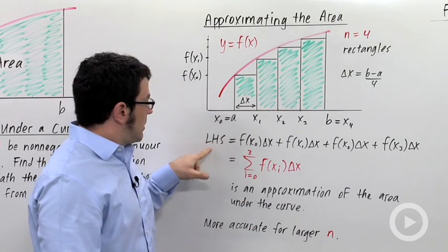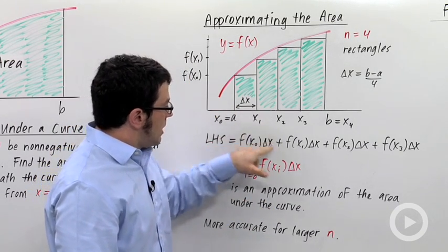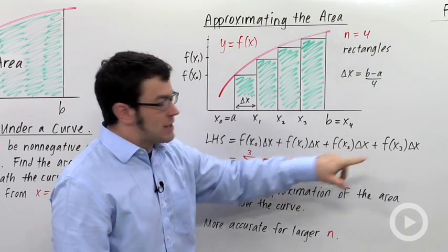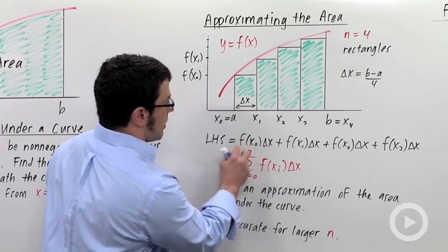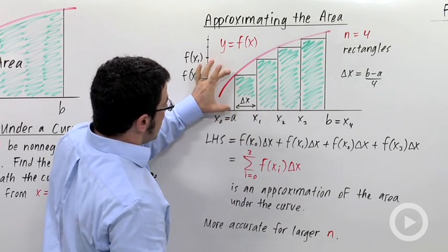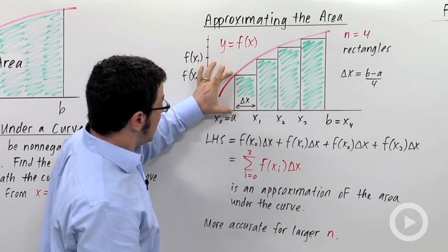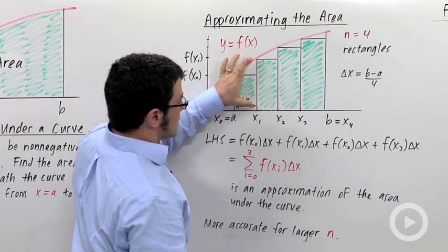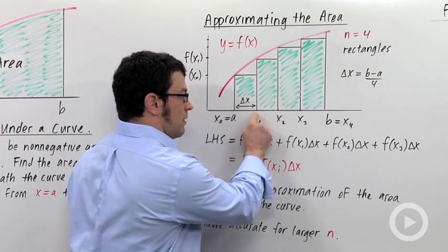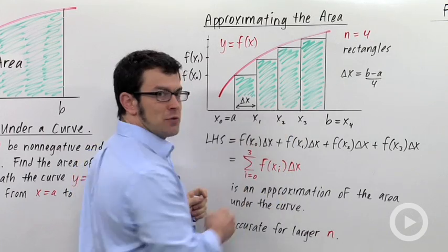This is a left-hand sum. The left-hand sum is the sum of areas of a bunch of rectangles. Each of these areas is a height times a width. Δx is the width in this first rectangle. f(x₀) is the height. In the second one, Δx is the width, and f(x₁) is the height. We're getting the heights from the left-hand x values for each rectangle.